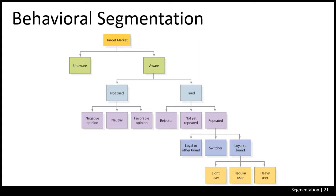One way to break down the market based on behavior relates to the evoked set. Within a target market, some buyers are unaware of the product, some are aware, some have tried it and rejected it, some have repeated a purchase, and some become loyal users. You may become loyal to a brand but still be a light user or a heavy user. Different levels of behavior alter how we choose the types of products we want to buy.